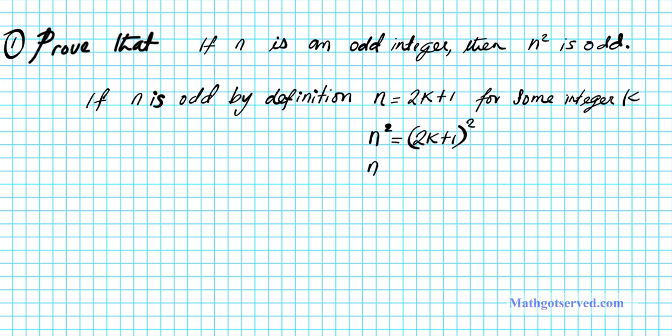So what we're going to do is expand this. This is (2k plus 1) times (2k plus 1), and when we work that out, we have 4k squared plus 2k plus 2k plus 1, which equals 4k squared plus 4k plus 1.